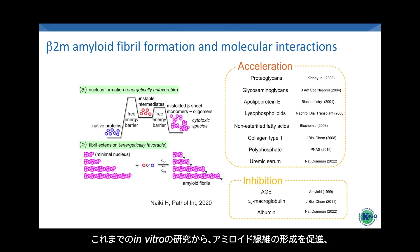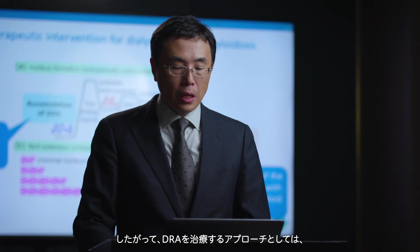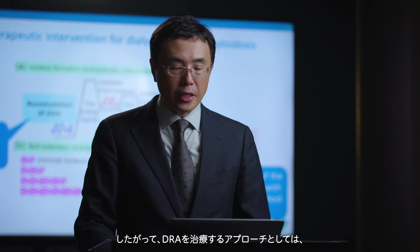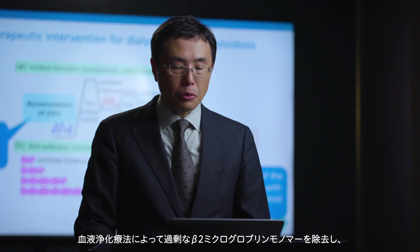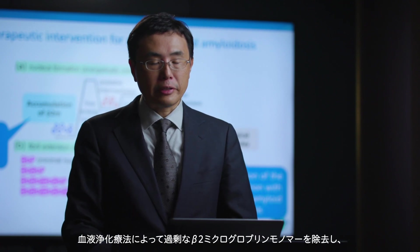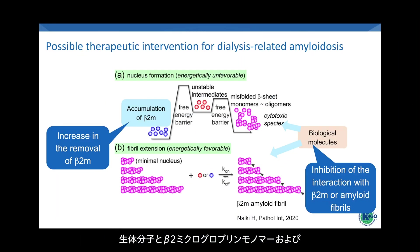Previous in vitro studies suggest the presence of various biological molecules that can either accelerate or inhibit amyloid fibril formation. Therefore, therapeutic approaches to treat DRA involve removing excess beta-2-m monomer through blood purification treatment, and inhibiting the interaction between biological molecules and beta-2-m monomers and amyloid fibrils.